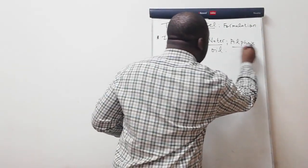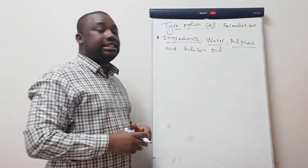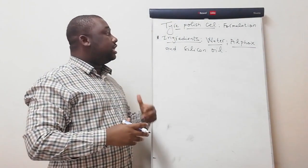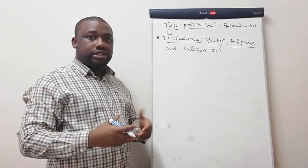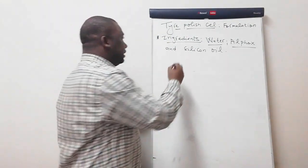The next ingredient is alphox. Alphox has a function of increasing the solubility of oil into water. So it acts as an emulsifier.